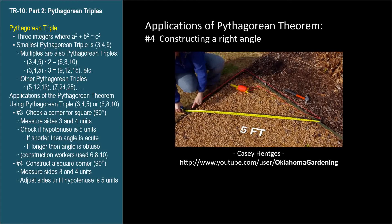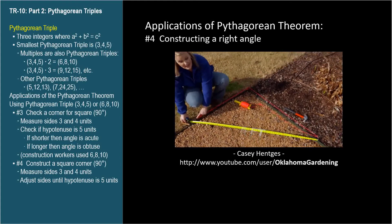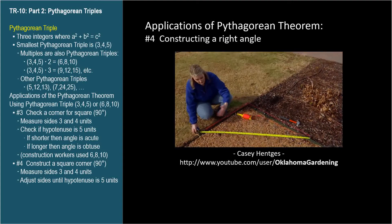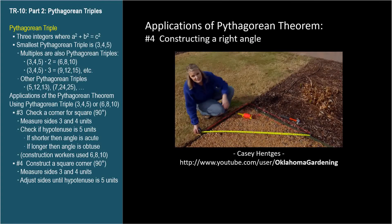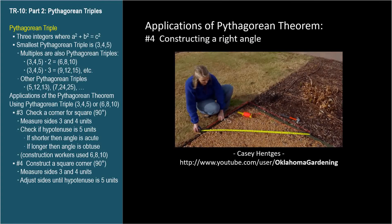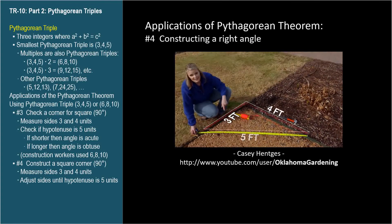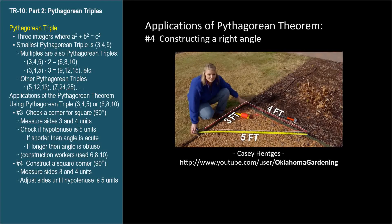And that distance should equal 5 feet. If it's more or less, you might need to move one of those points to make sure that hypotenuse is 5 feet. So, here we have 3, 4, and 5, and therefore, we know that this is a square corner.